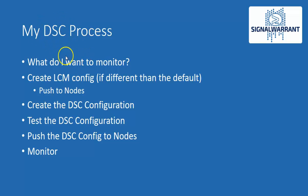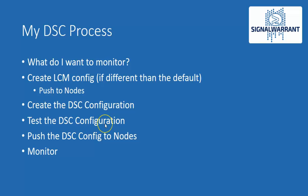Here's the way I approach DSC. First I define the problem or what I want to monitor — in this case I want to monitor an Exchange service to make sure it's running. Then I create the LCM config, which is an optional step unless your LCM config is outside the default. Then I create my configuration, and optimally I want to test it before deploying in production. Then I push it to the nodes and enter a monitor state — I can test the DSC configuration at certain intervals manually or set it up as a scheduled job.